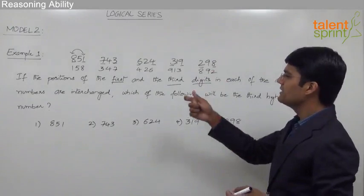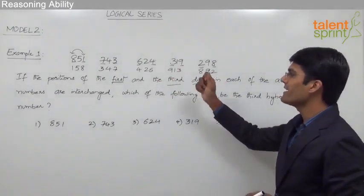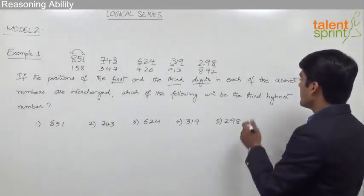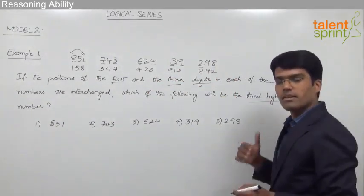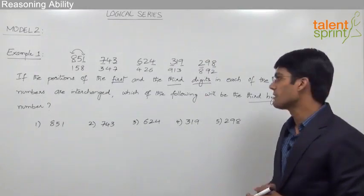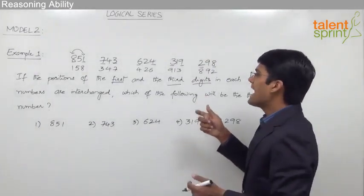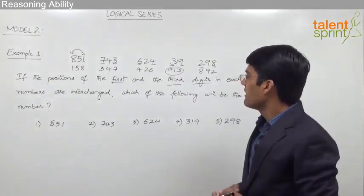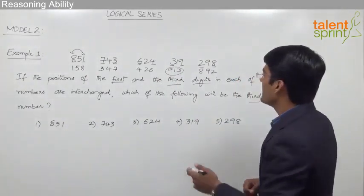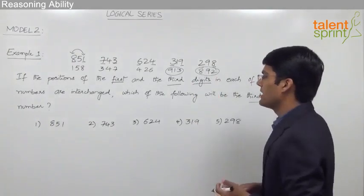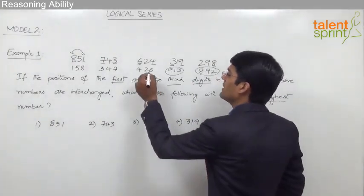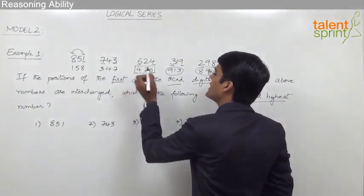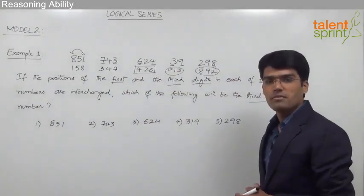From these new numbers — 158, 347, 426, 913 and 892 — we need to find out the third highest number. The highest number in the series is 913. The second highest number is 892, and hence the third highest number is 426, which is obtained from the original number 624.